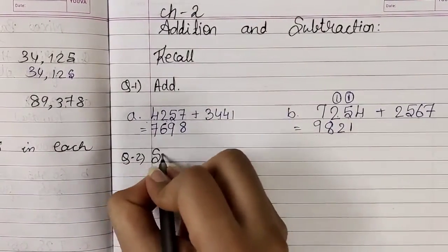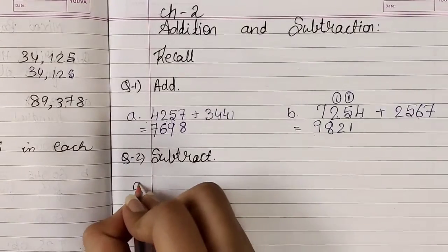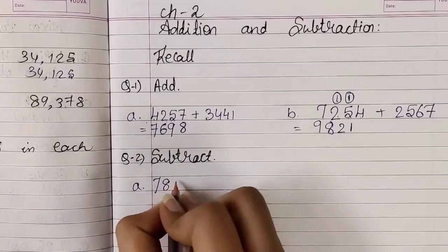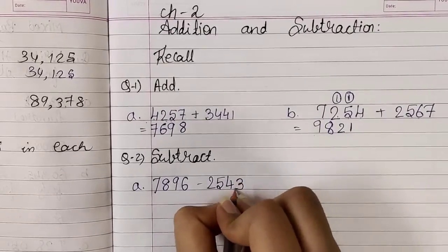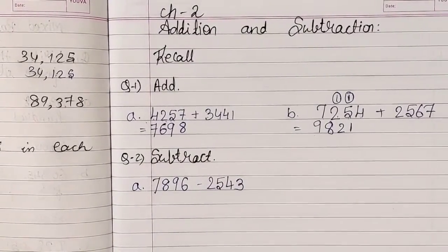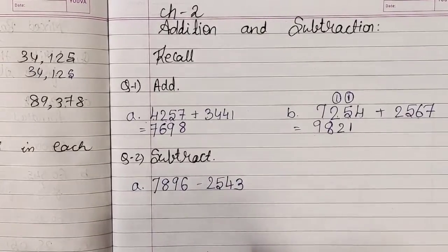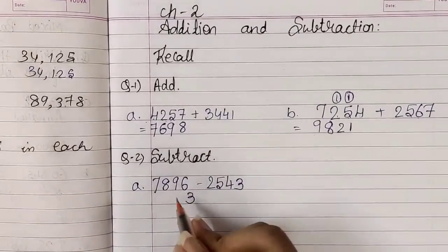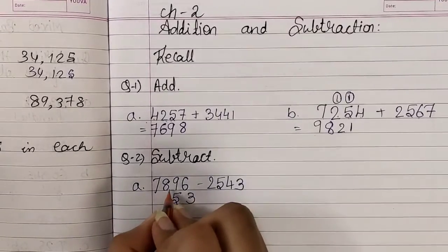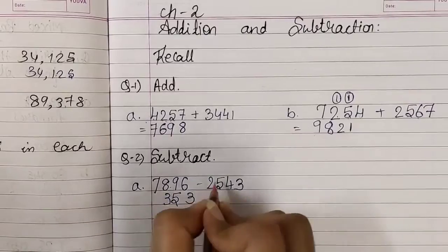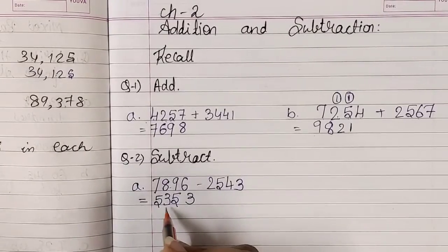Now next question: Question number 2 — Subtract. Number A: 7,896 minus 2,543. Students, subtraction भी हम पीछे से start करेंगे. So what is 6 minus 3? 6 minus 3 is 3. 9 minus 4? 9 minus 4 is 5. 8 minus 5? 3. 7 minus 2? 5. So students, इसका answer हो गया: 5,353.